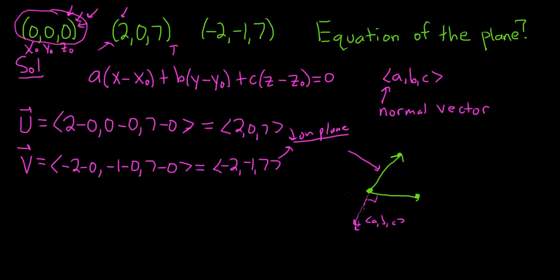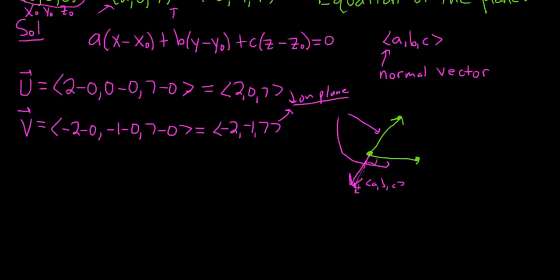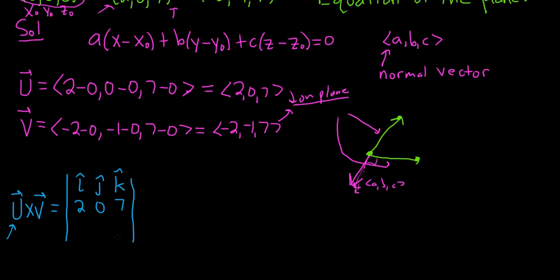Now we need to find the normal vector ABC, which is perpendicular to both, by finding the cross product U cross V. We set up the determinant with the first row as i-hat, j-hat, k-hat; the second row as the components of U: 2, 0, 7; and the last row as the components of V: −2, −1, 7. The pattern for expansion is plus, minus, plus along the first row.